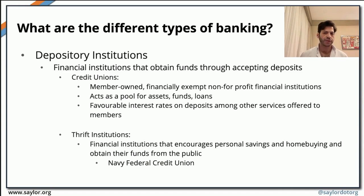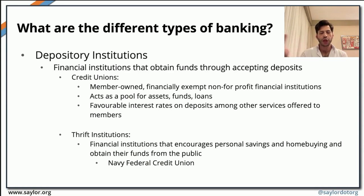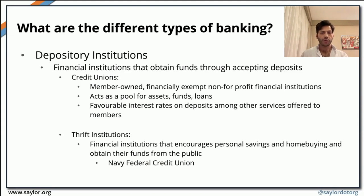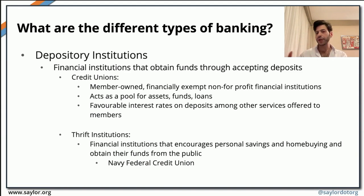For example, you have credit unions, which are basically member-owned financial institutions. They are tax-exempt because they are non-for-profit institutions. They pool money and funds from different members, and whatever money is pooled basically gets loaned out to the members who need loans. Credit unions provide loans at very favorable interest rates, and these services are only available for members — non-members cannot benefit from what credit unions offer.